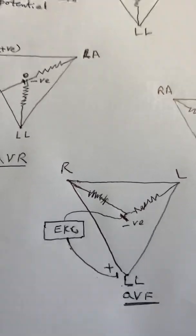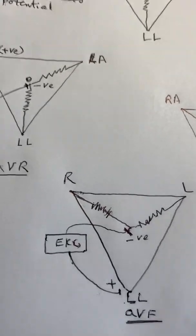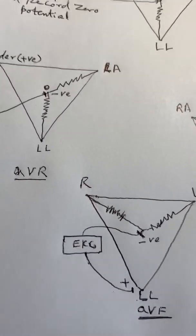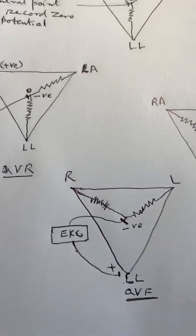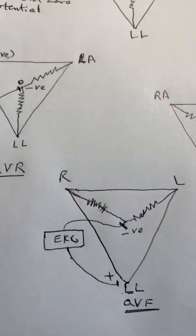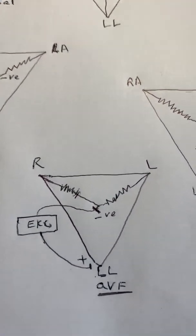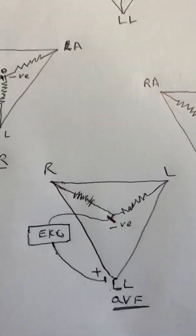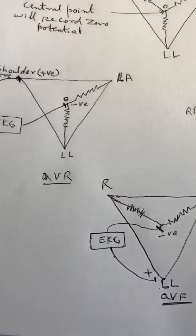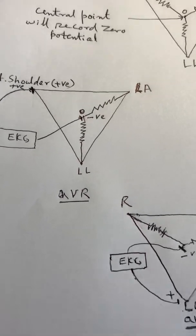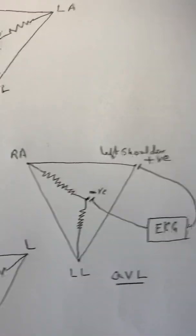Similarly for AVF: the left foot electrode is positive, and the other electrode going to the center is negative, but it records zero potential — so it acts as a reference or indifferent electrode. AVF means we are recording from the left foot, which is positive, and the center being zero is the indifferent electrode. This is the connection of the three augmented leads. I hope this has clarified a lot of problems. Thank you very much.